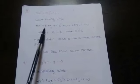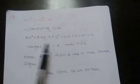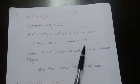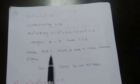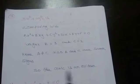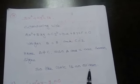Number 3: 3x² plus 2y² is equal to 14. Comparing the given equation to the general conic equation ax² plus bxy plus cy² plus dx plus ey plus f equals 0, we get a is equal to 3 and c is equal to 2. Since a and c are not equal but have the same sign, we say the given conic is an ellipse.